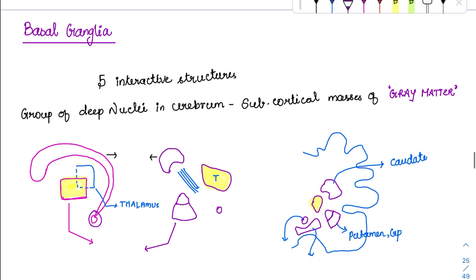Now coming to basal ganglia. Basal ganglia and cerebellum are two structures involved in controlling motor movements, which is why we study them under the motor system. Basal ganglia is a group of five interactive structures — the deep nuclei present inside the cerebrum. Inside the cerebral cortex, there are cortical masses present in the deep nuclei functioning together, which is why they are called basal ganglia.